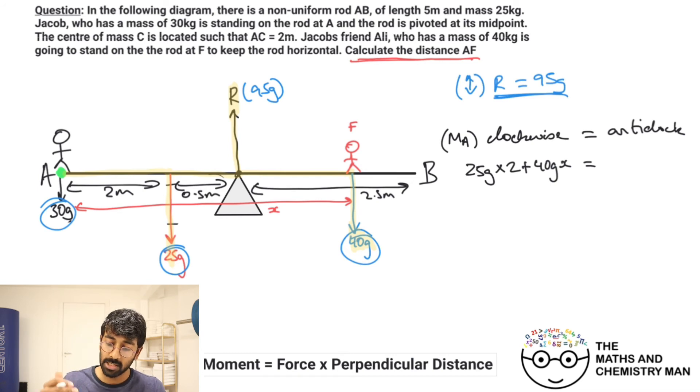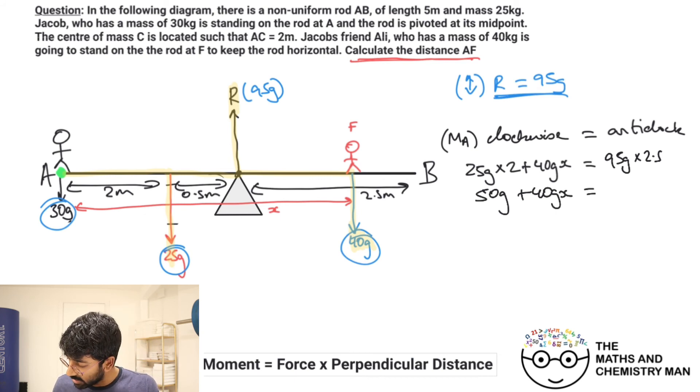The clockwise moments is going to be created by this 25g and the 40g over here. So we need 25g multiplied by a distance of 2, plus 40g multiplied by a distance of x. The anticlockwise moments is created by this 95g, and that's bang in the middle, so 95g times by 2.5—that's your distance.